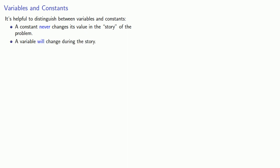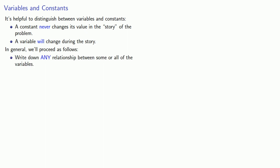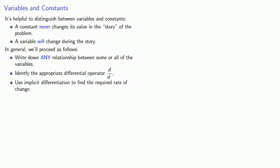A variable will change during the story. As a general rule, we want to make sure that we keep our variables as variables until we're ready to answer the question. In general we'll proceed as follows: first we'll write down any relationship between some or all of the variables, and then we'll identify the appropriate differential operator — the derivative with respect to something. This tends to be the hardest part of the problem, but once we have it we can use implicit differentiation to find the required rate of change.